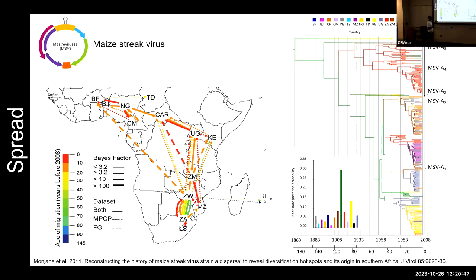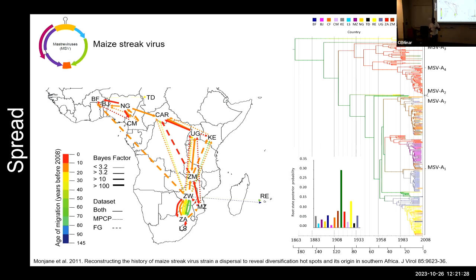We then asked where these viruses emerged from, since they infect maize — which is not an African crop, having been introduced around 1600. By surveying indigenous grasses across the continent, finding related viruses, removing recombination signals, and accounting for mutation rates to calibrate phylogenetic nodes, we estimated these viruses emerged around the mid-1800s — roughly 250 years after maize introduction. In evolutionary terms, 250 years is nothing.